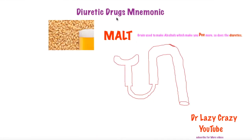Diuretics are drugs which make you pee more. The mnemonic I use to memorize these drugs is MALT. MALT is a grain we use to make alcohol — when you drink alcohol it makes you pee more. Similarly, diuretics make you pee more, so we can use MALT to remember the classes of diuretics.